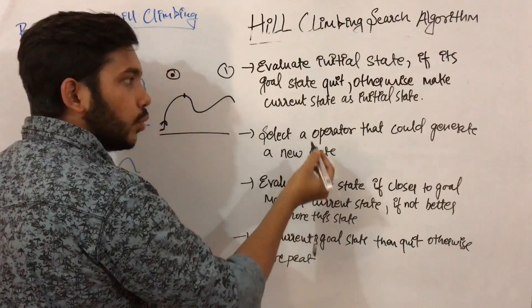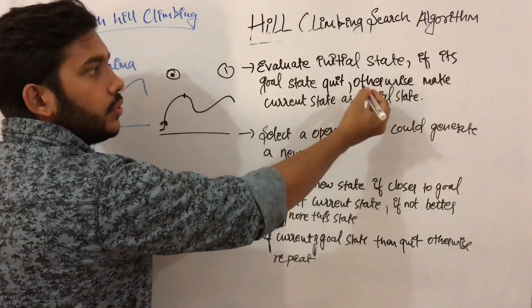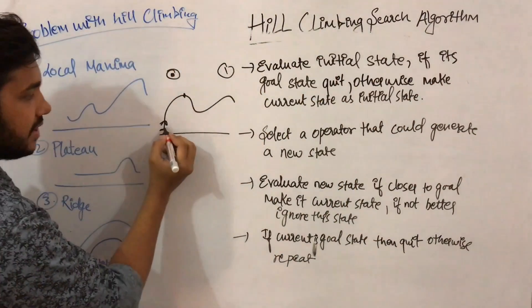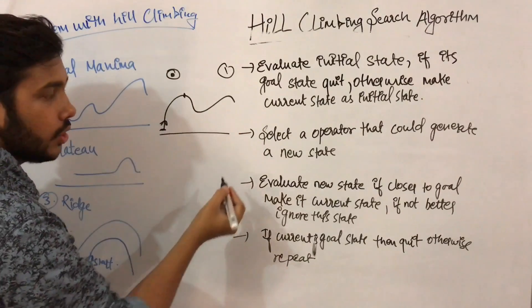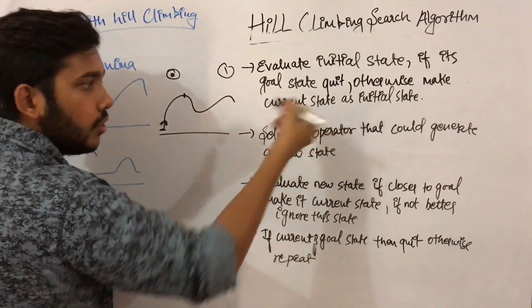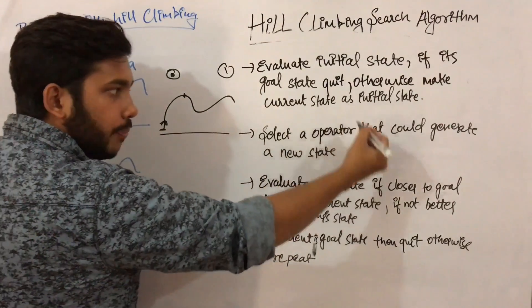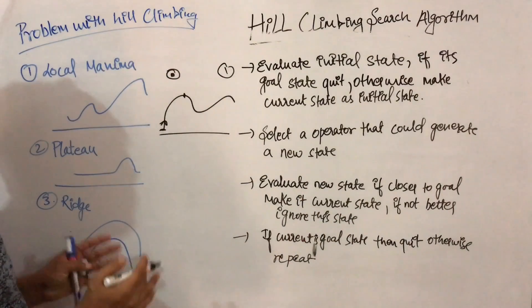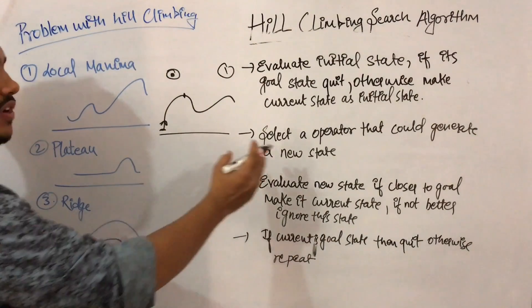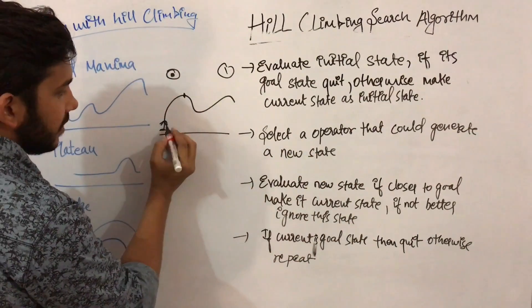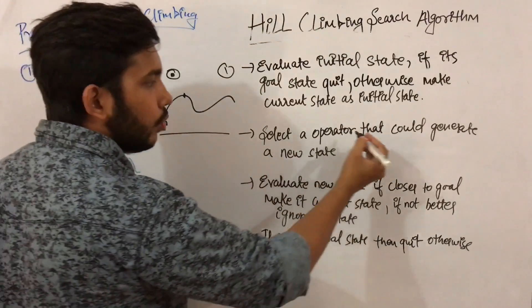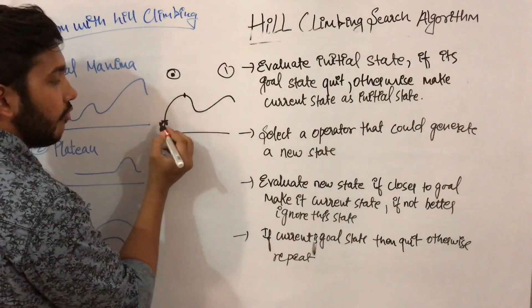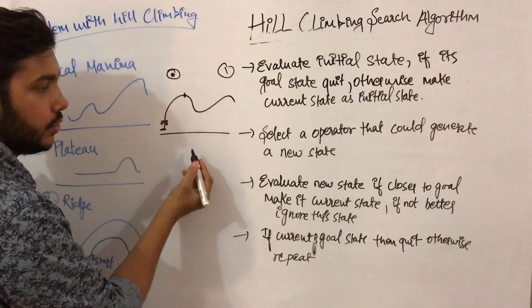Step 2: when the current state is not the goal state, you have to move forward. Select the operator that could generate a new state. You started from this point and you will generate a new state — meaning, for moving upward you have to generate a new state.